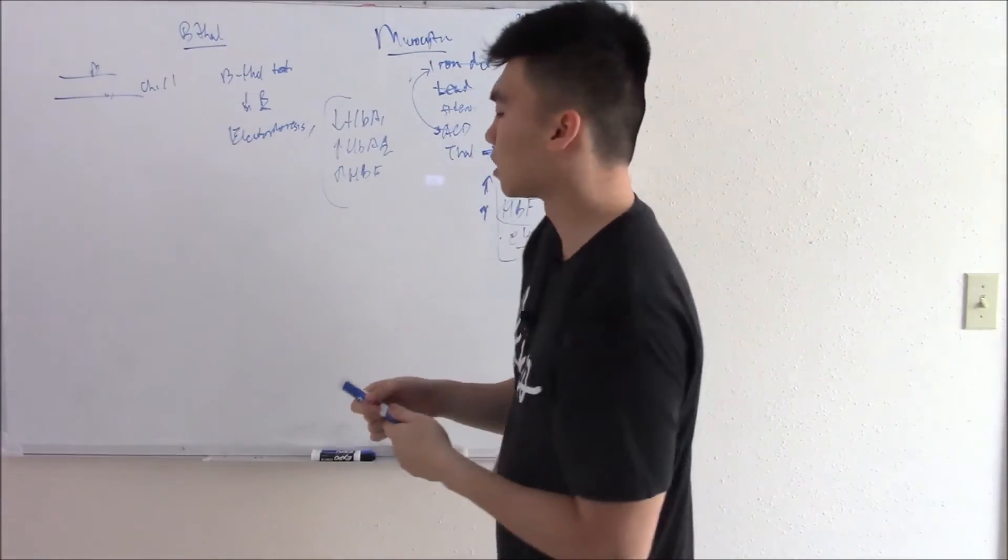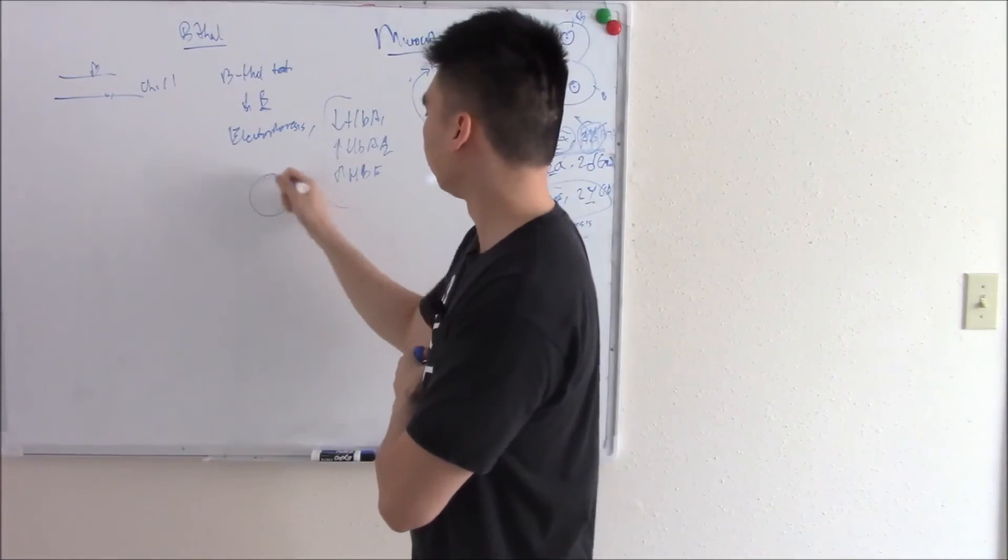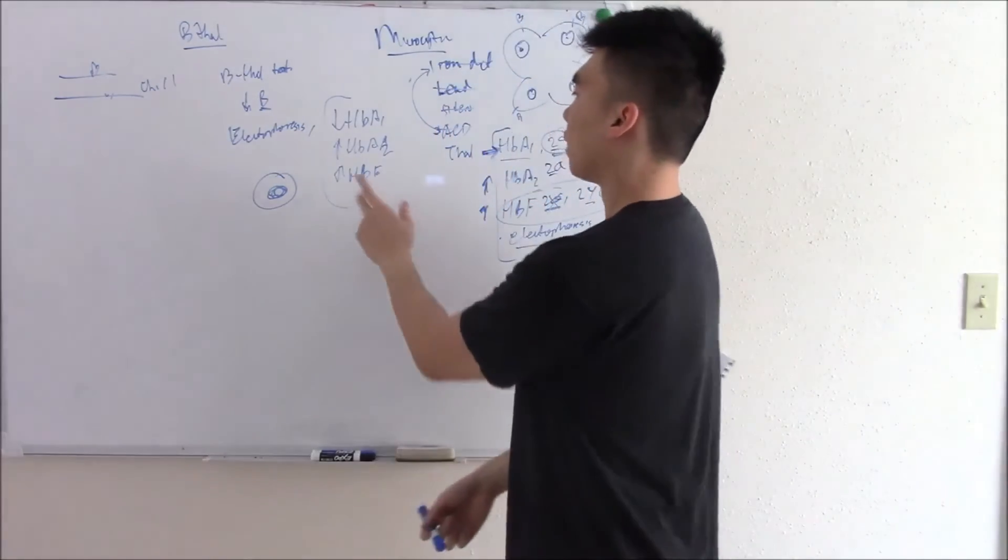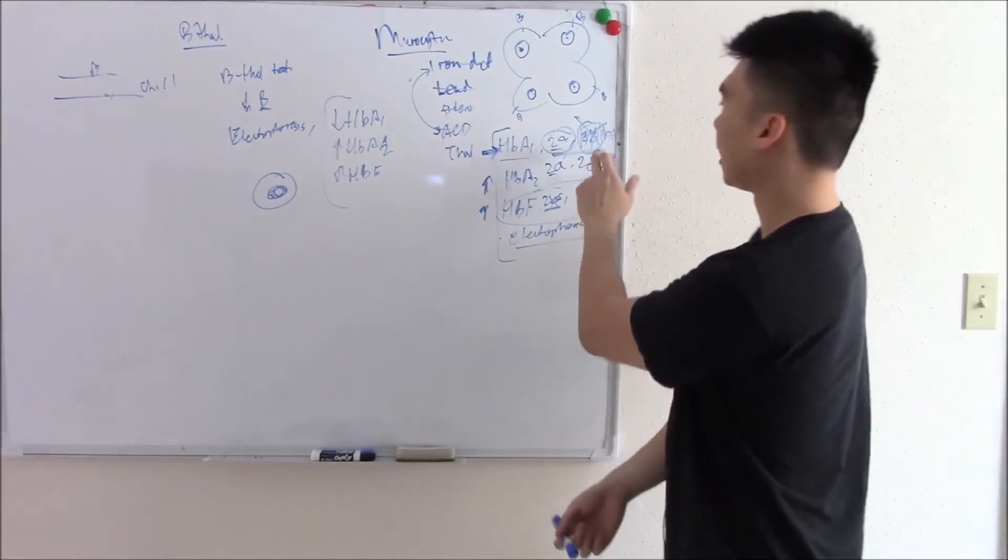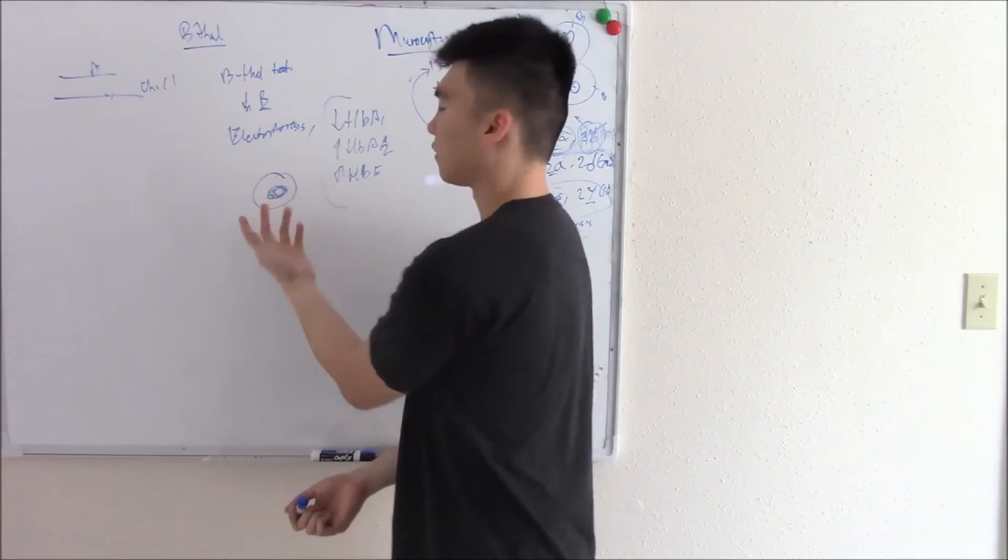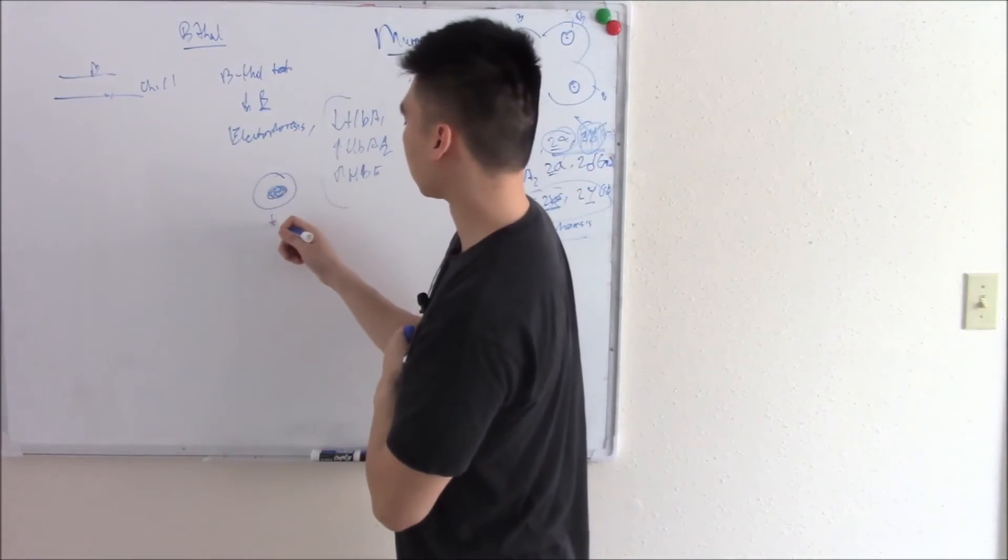So HbA2 increase, HbF increase. It's quite slight, very mild anemia. Not only will you see changes in your electrophoresis, but if you do bloods, you're going to see something called a target cell, which looks like a target. Without beta chains, alpha chains will aggregate and the aggregation of the alpha globin makes it darker in the center.